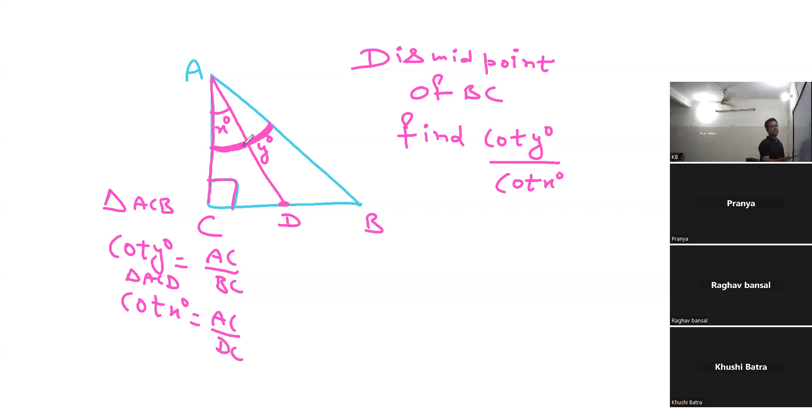You can see this is base upon perpendicular. Now the ratio is cot y upon cot x. Cot y is AC upon BC, and cot x is AC upon DC.